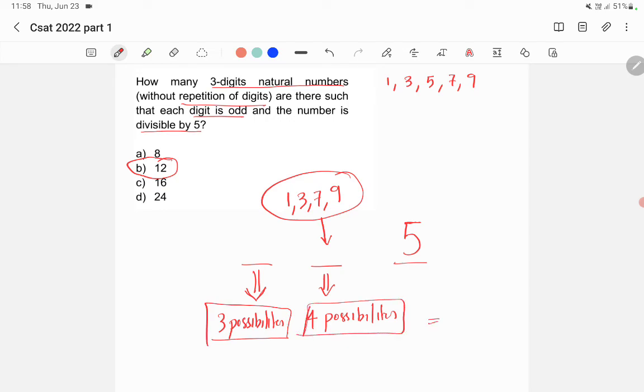We can do it like 3 into 4. Total we will get 12 possibilities. So this is also another way of solving this problem.